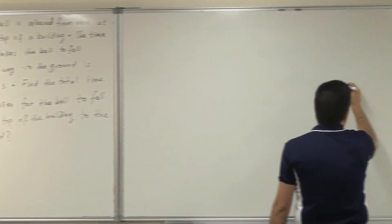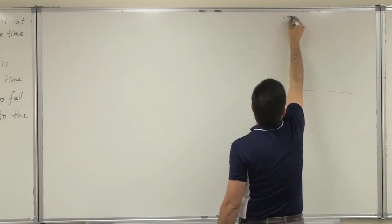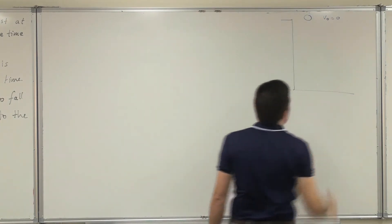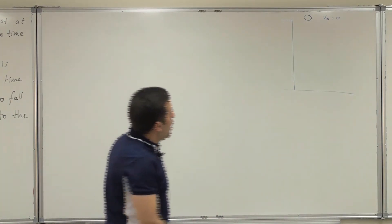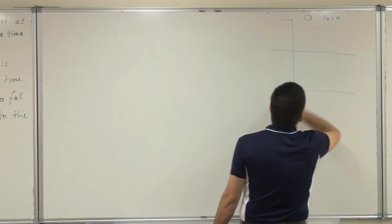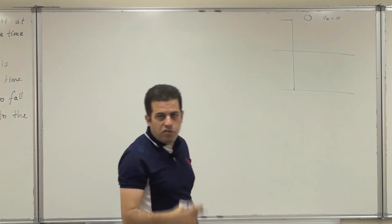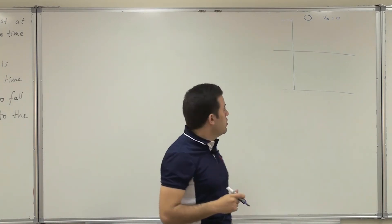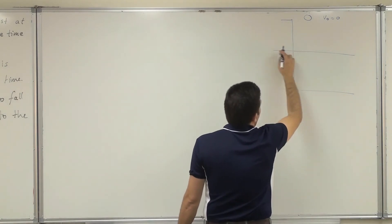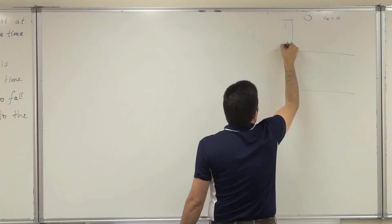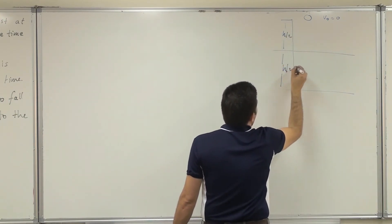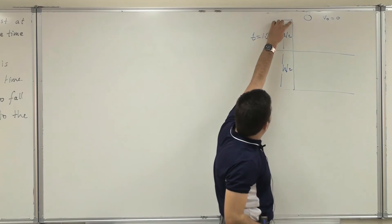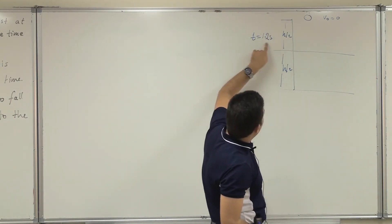A simple sketch will make this problem easy. I have a ball at the top of a building, released from rest, meaning v naught equals zero. The ball gains speed as it falls due to gravity. He gives the information that at halfway — h over 2 — the time taken equals 1.2 seconds. So from the point of release to the halfway point, it takes 1.2 seconds.